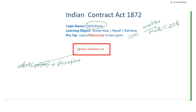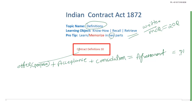Next is Acceptance. Then Consideration. Then Promise — from Offer and Promise comes Acceptance. Acceptance leads to the definition of terms. These are the core terms defined under the Act.